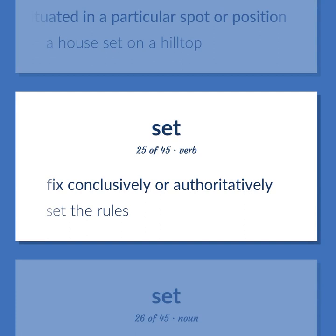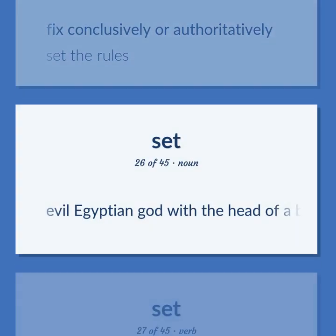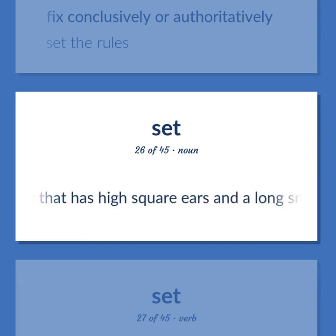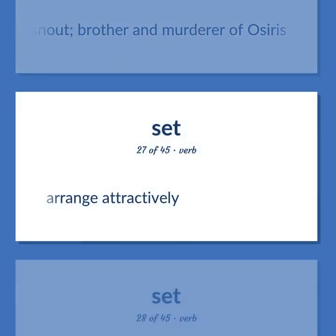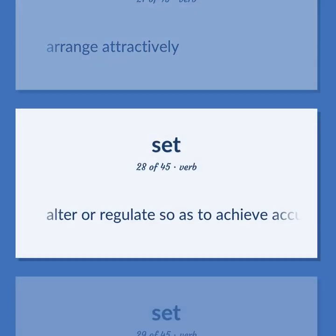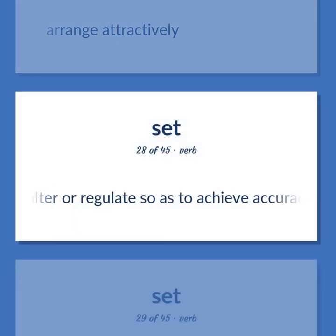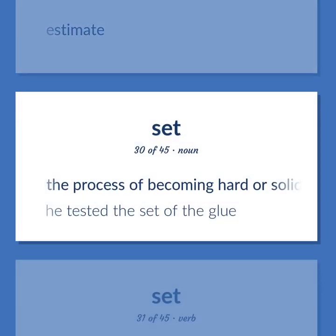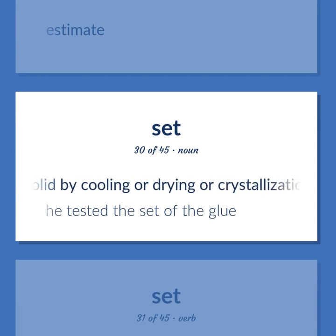Set: fix conclusively or authoritatively — set the rules. Also: evil Egyptian god with the head of a beast that has high square ears and a long snout, brother and murderer of Osiris. Also: arrange attractively; alter or regulate so as to achieve accuracy or conform to a standard; estimate. The process of becoming hard or solid by cooling or drying or crystallization — he tested the set of the glue.